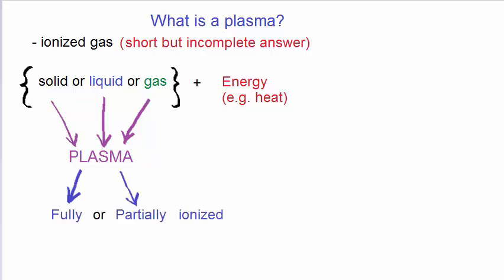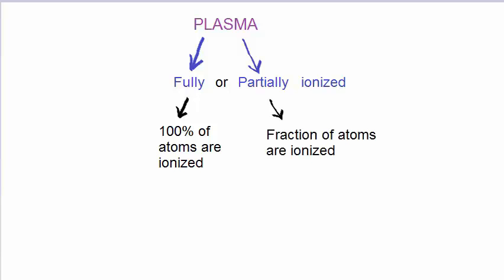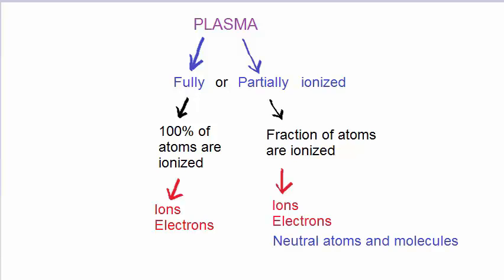A plasma can be fully or partially ionized. A fully ionized plasma means that 100% of the atoms are ionized. By implication, a partially ionized plasma isn't. Only a fraction of atoms are ionized. That means the fully ionized plasma only consists of ions and electrons, while the partially ionized plasma not only consists of ions and electrons, but also of neutral atoms and molecules.